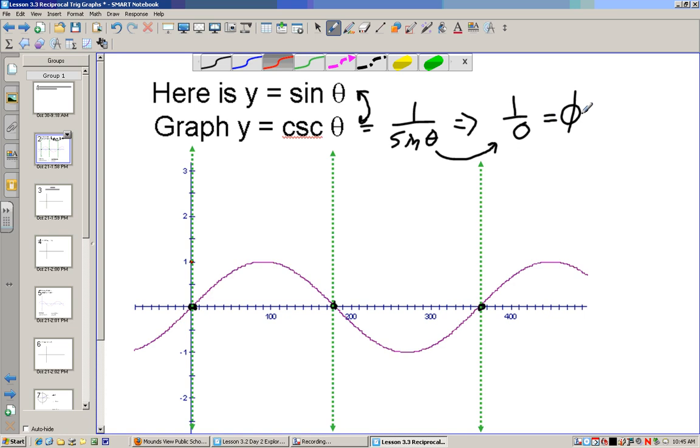What these do is they show us that cosecant can't possibly pass through these lines. Now let's put in some more points. What happens when sine of theta is 1? When sine of theta is 1, cosecant is 1. So let's go to the points where sine is 1, because cosecant will be 1 also.